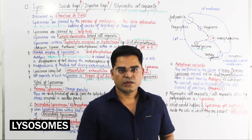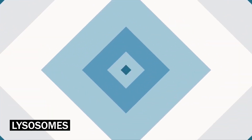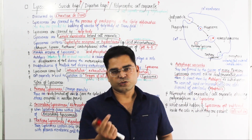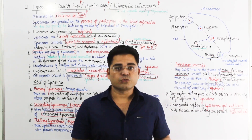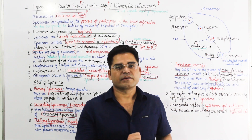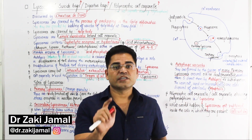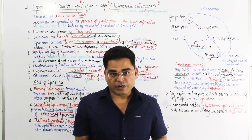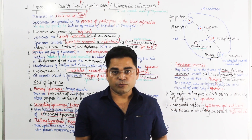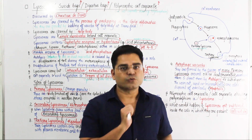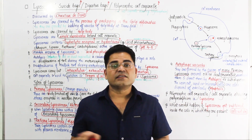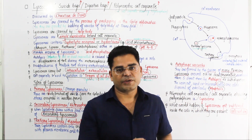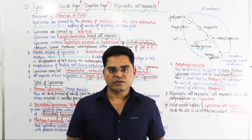We start with lysosomes. Lysosome is also known as the 'suicide drug of the cell' and the 'digestive drug of the cell,' because it contains digestive enzymes. These digestive enzymes work in an acidic medium at a pH of 4 to 5.